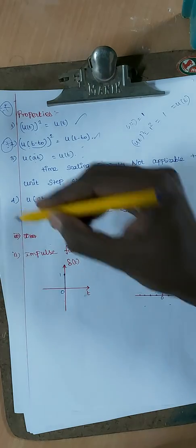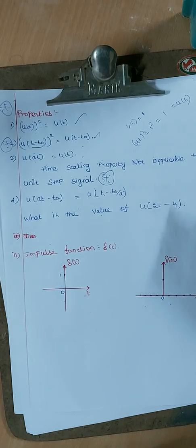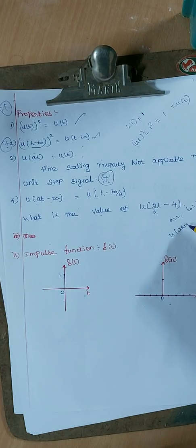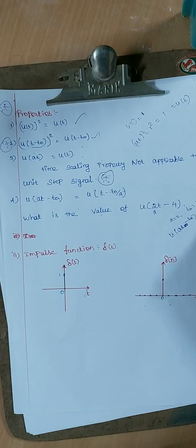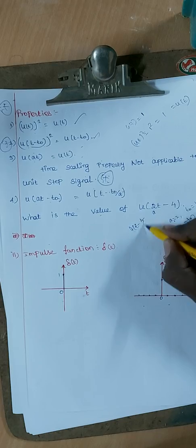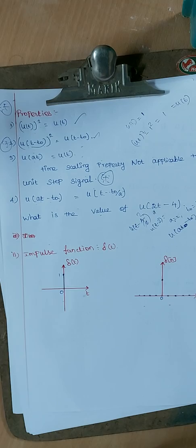For example: what is the value of u(2t − 4)? Here A = 2, T₀ = 4. Using the formula, u(t − T₀/A) = u(t − 4/2) = u(t − 2). So the answer is u(t − 2).